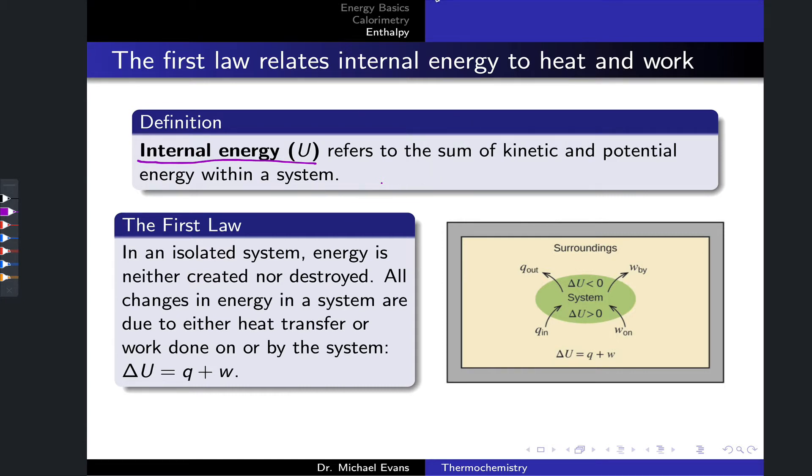External energy, which we're much less concerned with, has to do with the system moving through the surroundings, for example, kinetic energy of the entire system as a whole. We don't need to know anything about the inner workings of the system to calculate external energy, and so it's not very interesting if we're chemists interested in the energetics of the molecules within a system. So internal energy, U, is the sum of kinetic and potential energy within a system, and this word within is really the key there.